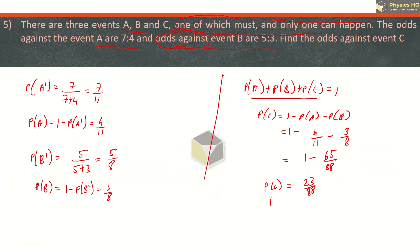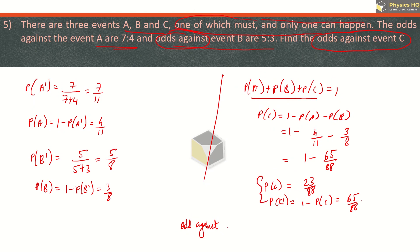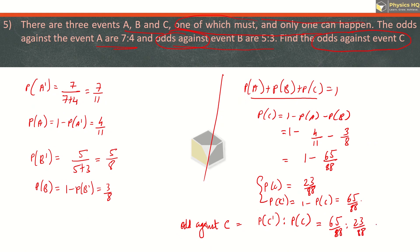P(C) is 23 by 88 and P(C dash) is 65 by 88. But the question asks for the odds against event C. Odds against means it will be the ratio of P(C dash) is to P(C). When odds in favor, it would be P(C) is to P(C dash). So putting in the values: 65 by 88 is to 23 by 88, and cancelling 88 from both sides, the odds against C are 65 is to 23.